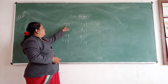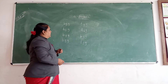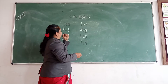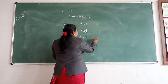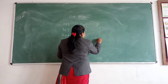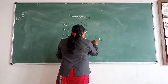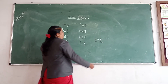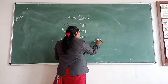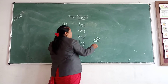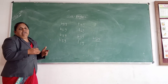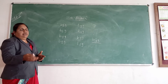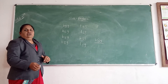Now here, it is B-A-G, bag. But if I will remove this A and take another, so what will it do? The word will become different. So it is called a vowel.